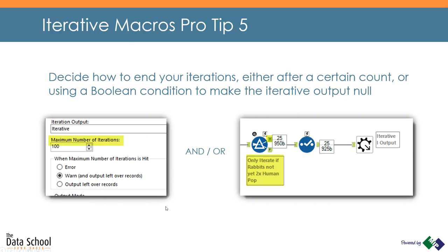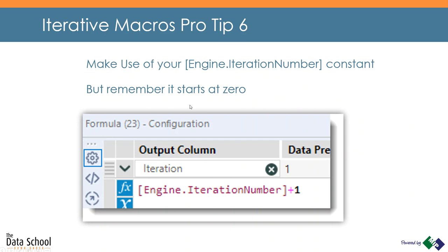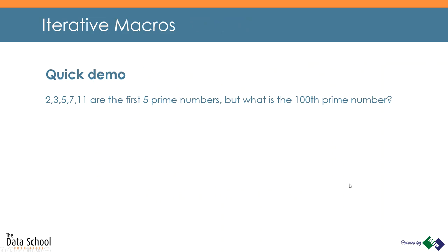Pro tip number six is making use of your engine iteration numbers. This is a constant that Alteryx allows you to tap into for iterative macros — it keeps track of every iteration number, but it starts at zero. So if you want to make really good use of it, I'd recommend you create an iteration calculation, grab this from your set of constants, and just add one to it. Alright, so that's six quick tips — let's go and have a look at them in action within a demo.